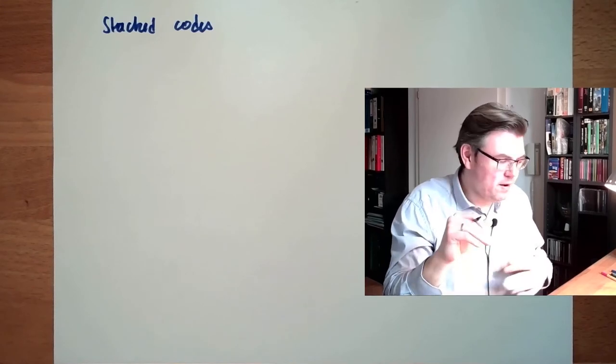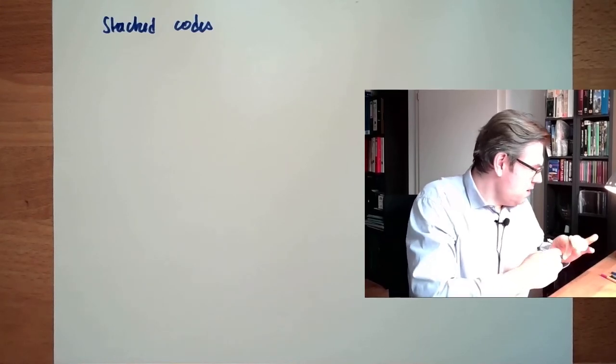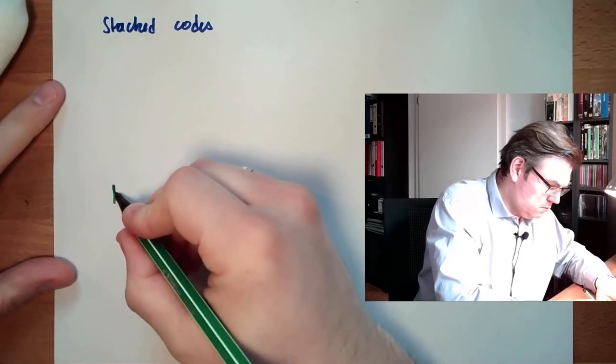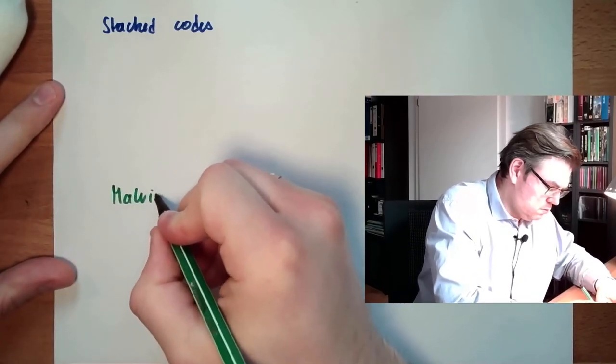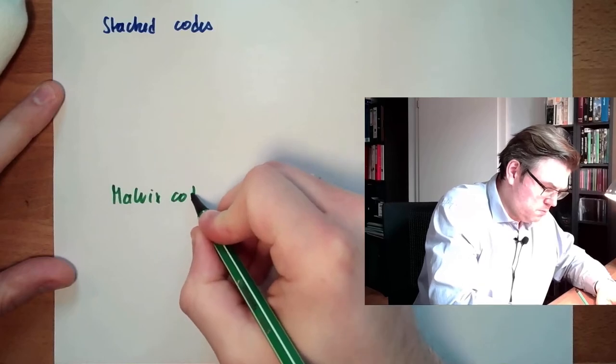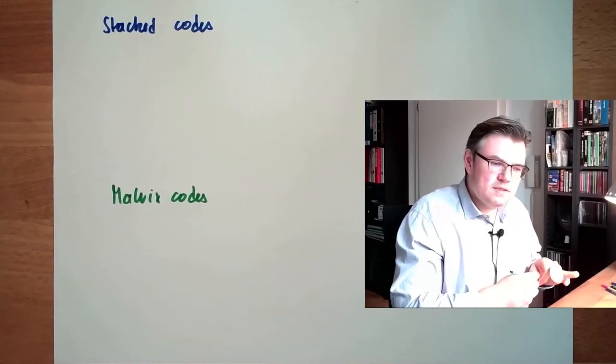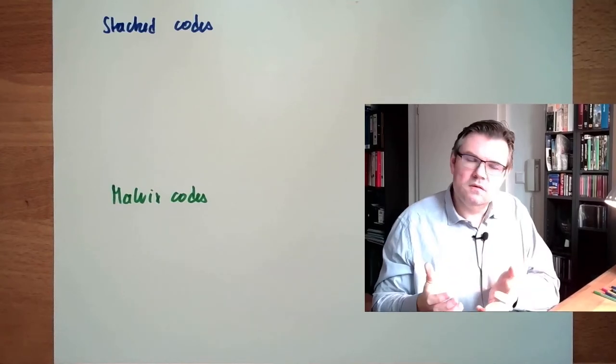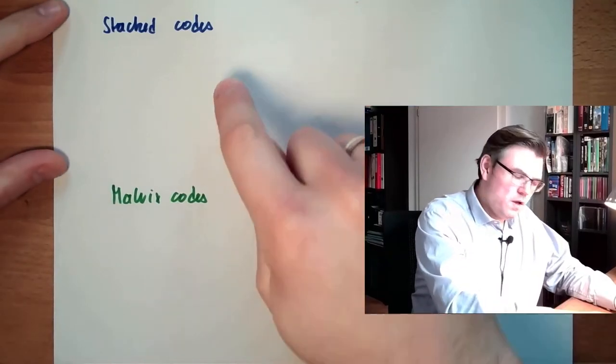They read it line by line. And then there are so-called matrix codes, where the data is simply presented in form of a matrix. So this is more like a book and this is like a picture.